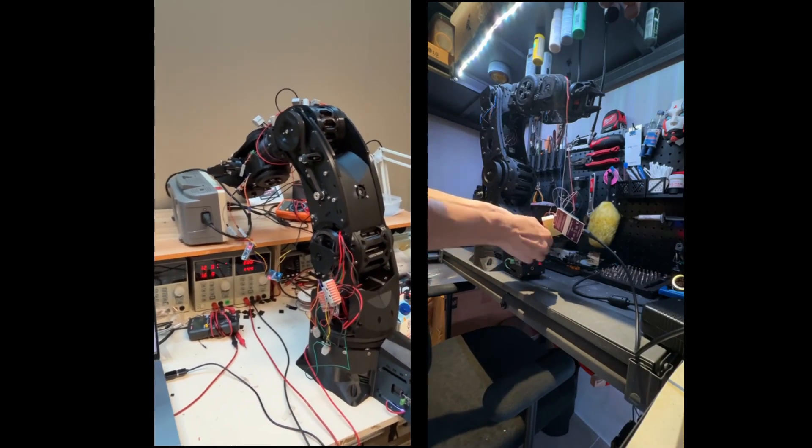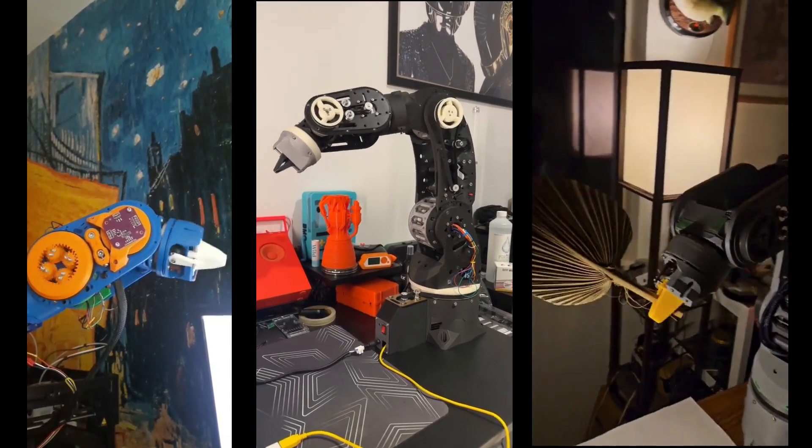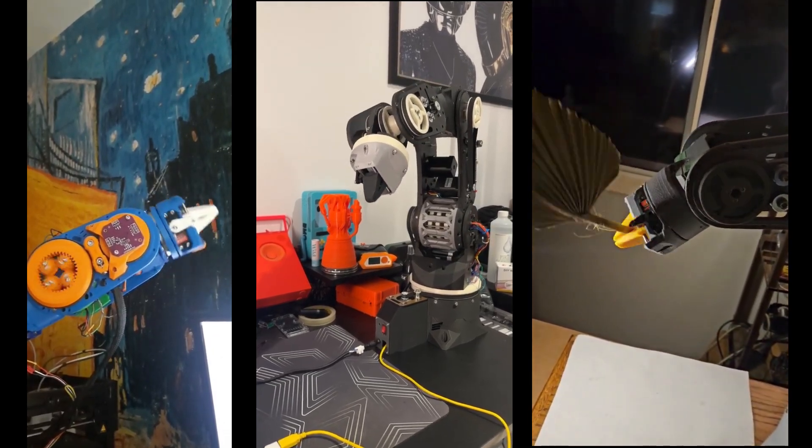The complete kit includes everything: 3D files, assembly guide, wiring diagrams, and programming software. Click the link below and you'll have instant access to all the files and can start printing immediately. Your robot arm is waiting.